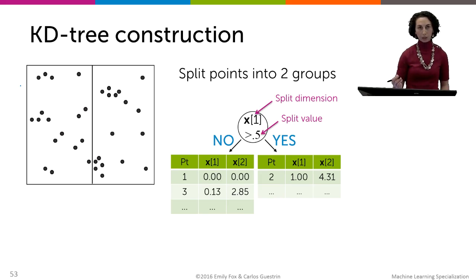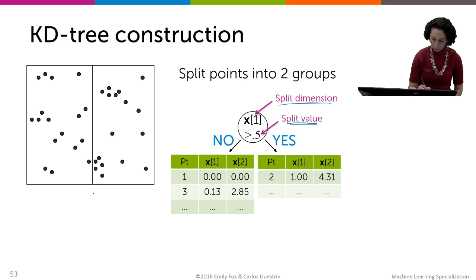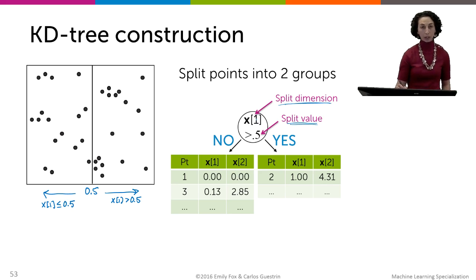So the first thing that we do is we're going to split our data table into two different groups. And the way we're going to do that is by choosing a split dimension, which feature are we splitting on, and a split value, the threshold for this split. So here in this example, we chose a split value of 0.5 and we're splitting on the first feature. So everything to the right are cases where this first feature takes values greater than 0.5, and everything to the left are cases where the first feature takes values less than or equal to 0.5.